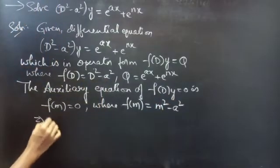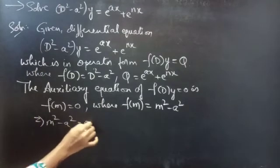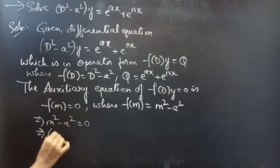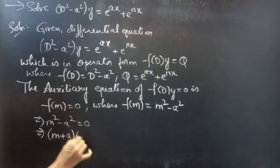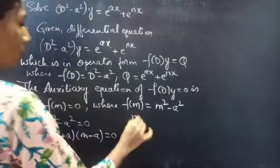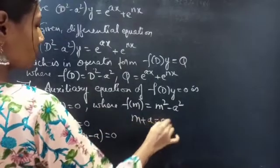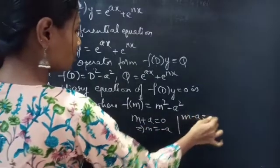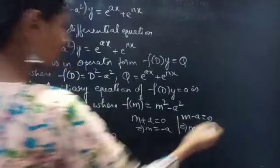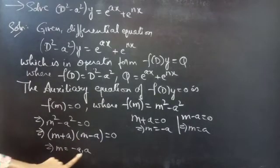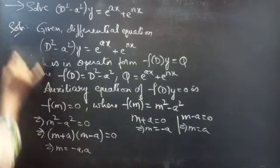Our auxiliary equation becomes m² − a² = 0, which is in the a² − b² form, so you can write m² − a² = (m + a)(m − a) = 0. Equating each factor to zero: m + a = 0 gives m = −a, and m − a = 0 gives m = a. So we get m = −a and m = +a, which are distinct and real roots.